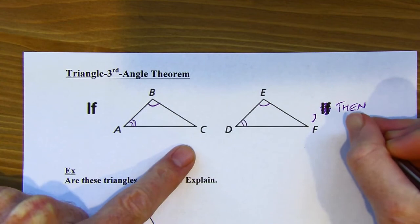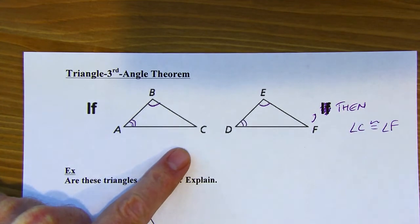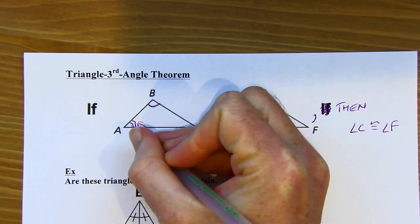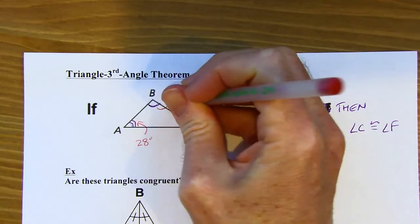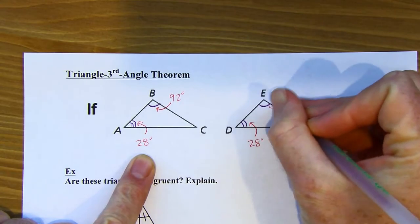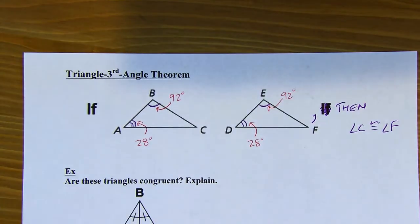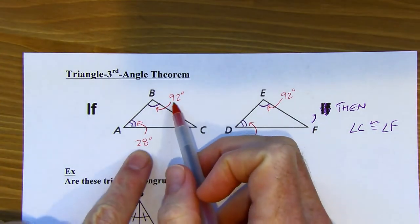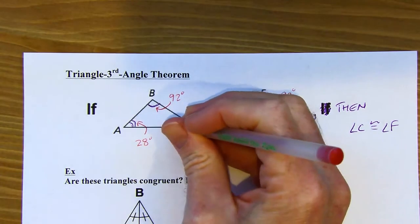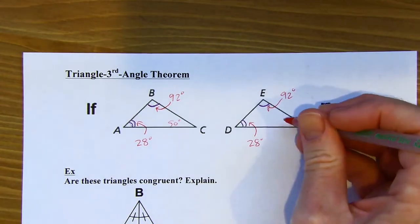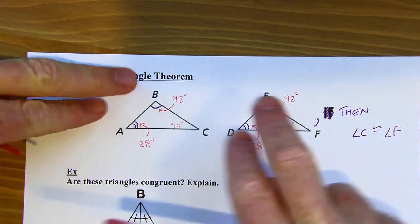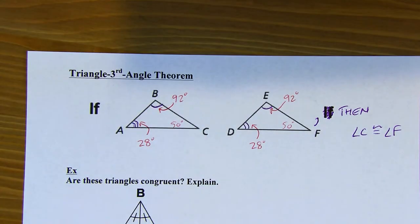Let me illustrate — suppose those two known angles are 28 degrees and 92 degrees. If I know those two angles in the first triangle, I know the matching pair in the second triangle as well. The angles in a triangle add up to 180 degrees, so I've got 120 degrees accounted for, leaving 60 more. Since I have the same equation in both triangles, those third angles end up congruent. It doesn't matter what the measure of the first two sets are — the remaining piece is going to be congruent as well. That's the Triangle Third Angle Theorem.